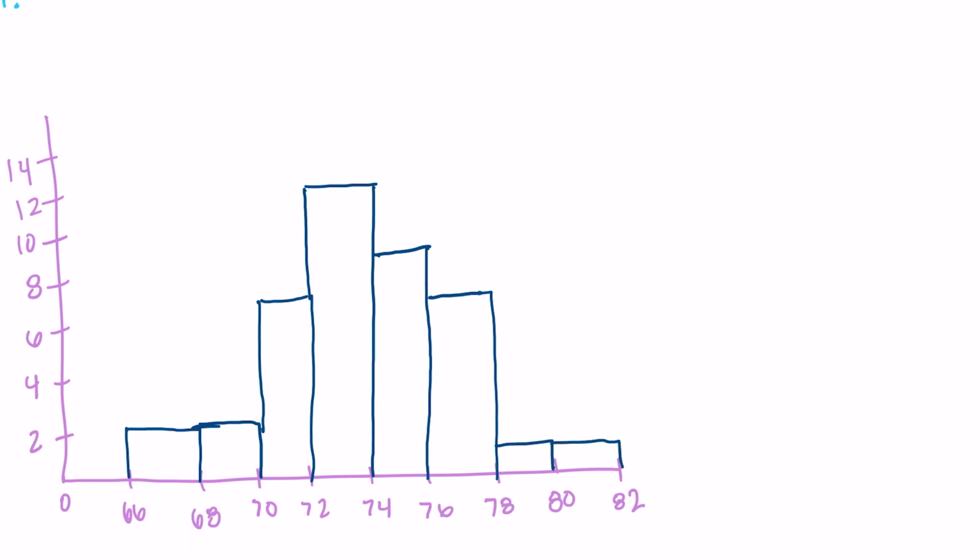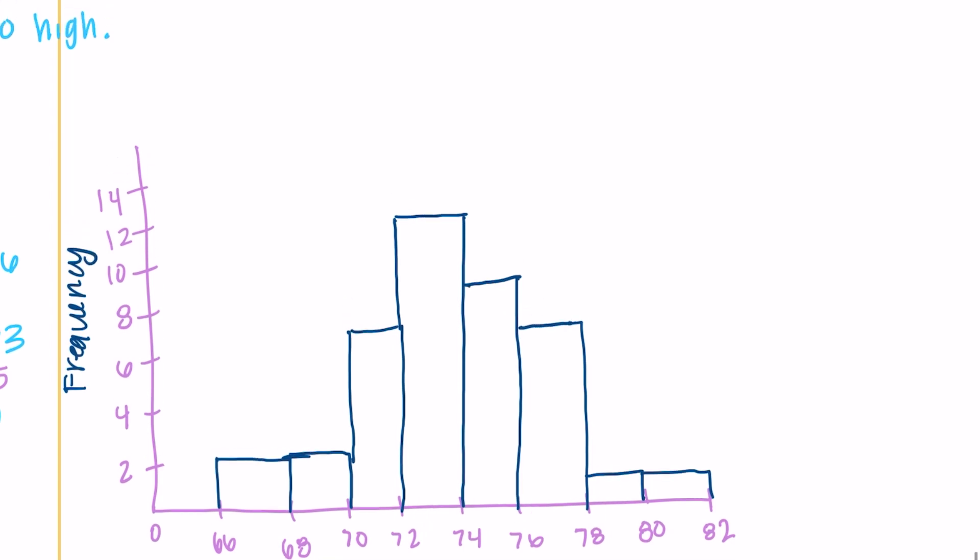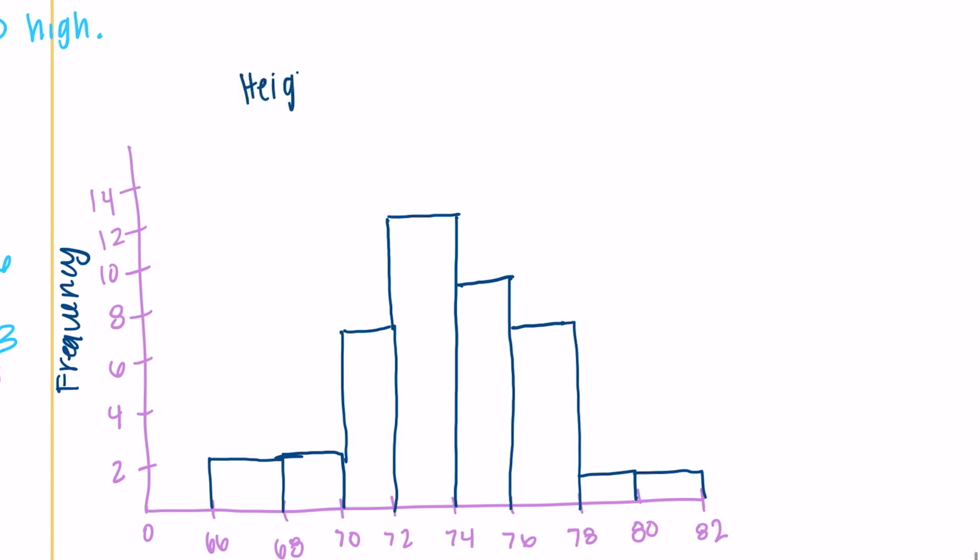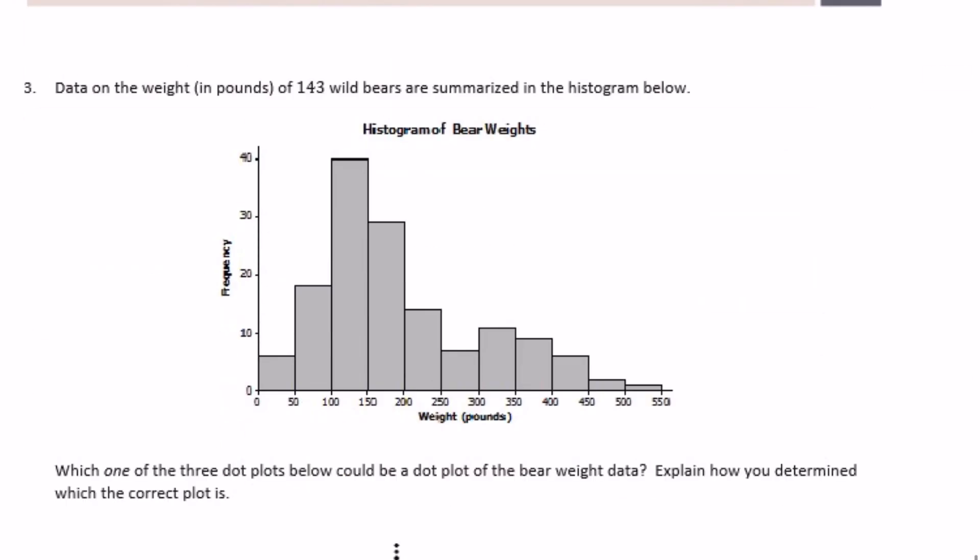So that is what our histogram should look like. The only thing I missed are my labels. Let's label it. This would be height in inches, this is frequency, and let's call it height of Texas men's swim and dive team.